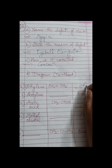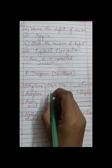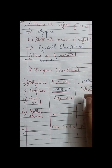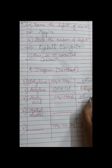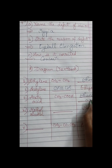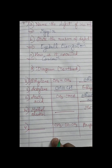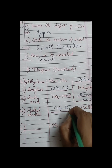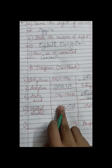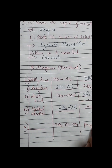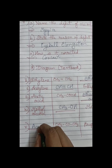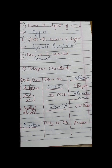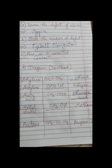Ethylene can be written as CH2=CH2; acetylene is CH≡CH. IUPAC names: methyl alcohol is CH3OH, where OH is the alcohol group and methyl comes from methane. Propan-2-one is acetone. If you know carbon compounds well, you can easily score 10 to 15 marks.